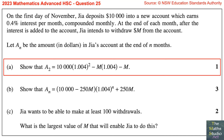Question 25. On the first day of November, GIA deposits $10,000 into a new account which earns 0.4% interest per month compounded monthly. At the end of each month, after the interest is added to the account, GIA intends to withdraw M dollars from the account. Let A_N be the amount in dollars in GIA's account at the end of N months. Part A.